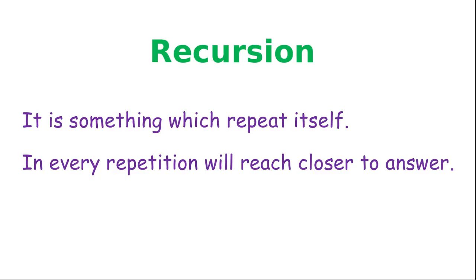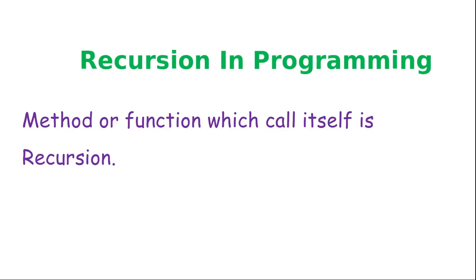So let's try to define recursion in a very formal language. Recursion is something which repeats itself continuously, and in every repetition it reaches closer to our answer. As we observed in the first example, every recursion step the first person is going closer to arriving at his actual answer. In a programming language, every method or function which calls itself and eventually arrives at your solution — that is what is called recursion.